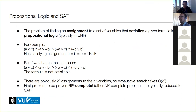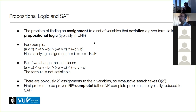An important part of KR was done in the 50s with propositional logic and SAT — the satisfiability problem. In propositional logic, you write formulas with only binary variables — each can only be true or false. The satisfiability problem is finding a satisfying assignment to these variables so that the formula evaluates to true. If such an assignment exists, the formula is satisfiable; if not, it's unsatisfiable.